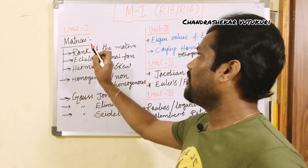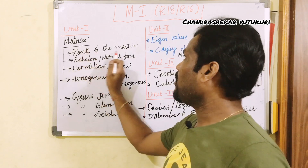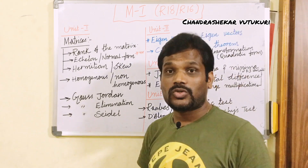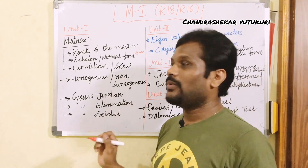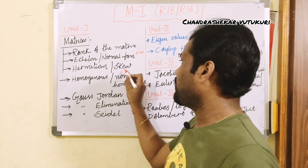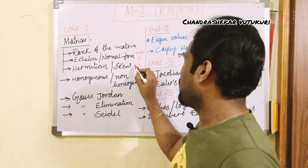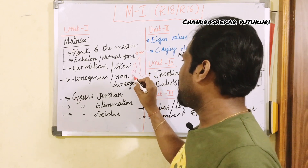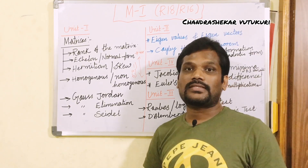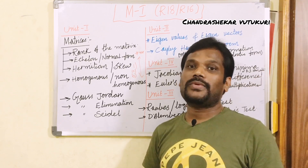The first important sure-shot question is from Unit 1. Please work out matrices — the rank of the matrix using echelon or normal form is very important. From Unit 1 you are going to get two questions for sure: Hermitian as well as skew-Hermitian matrix, or homogeneous or non-homogeneous systems. You will get 1a as well as 1b for sure.